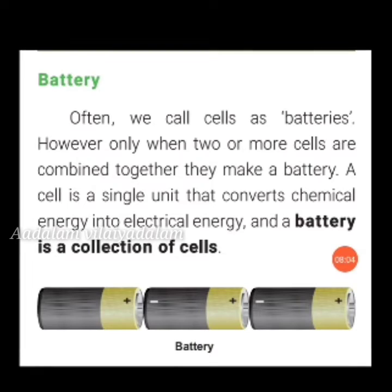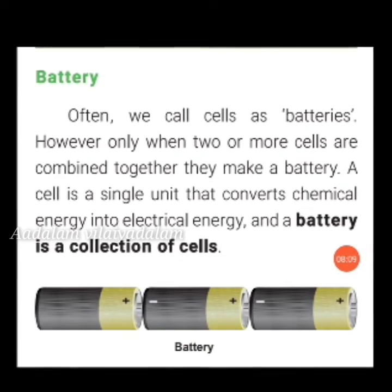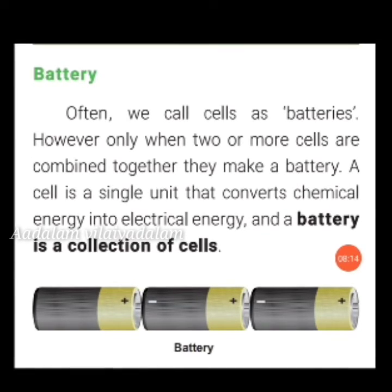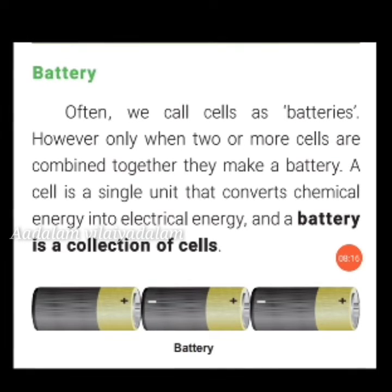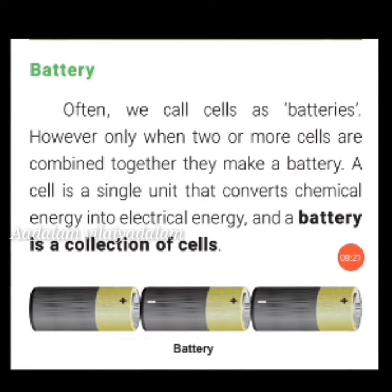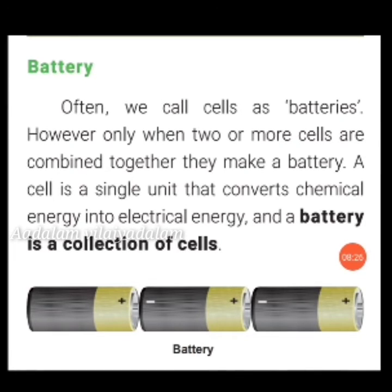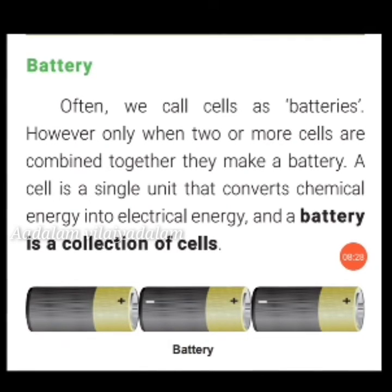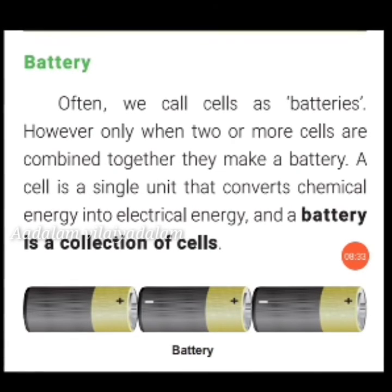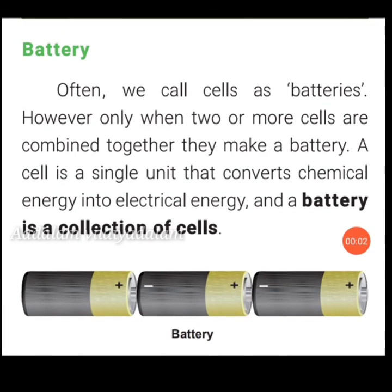Our next topic is battery. We often call cells as batteries; however, a battery is specifically formed only when two or more cells are combined together. A cell is a single unit that converts chemical energy into electrical energy, while a battery is a collection of cells.